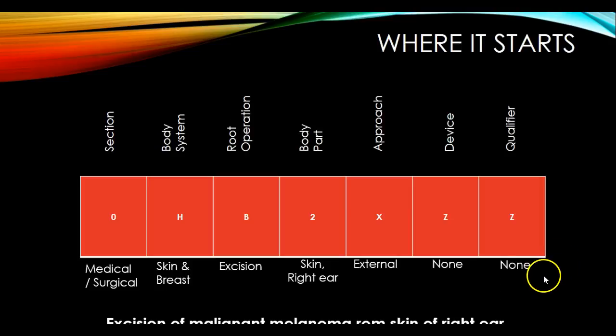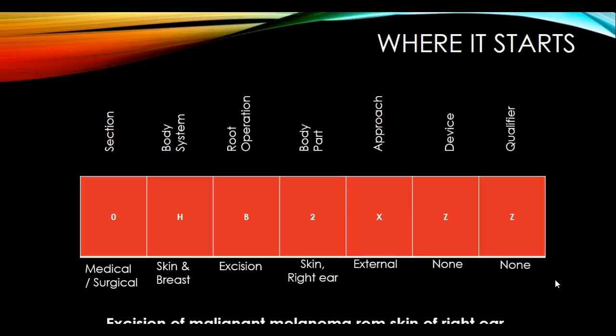There's no qualifier mentioned either, and that's how the code is built. You're going to work through a lot of these PCS codes in the coming weeks and become familiar with how to determine which section, body system, root operation, body part, approach, device, and qualifiers apply to each problem. The root operation cards are also very helpful when figuring out where to start and how to build a code.